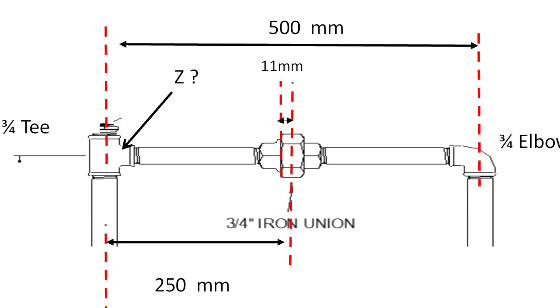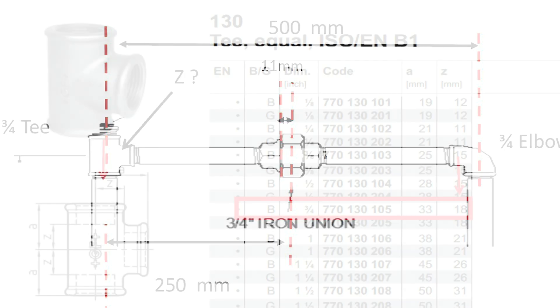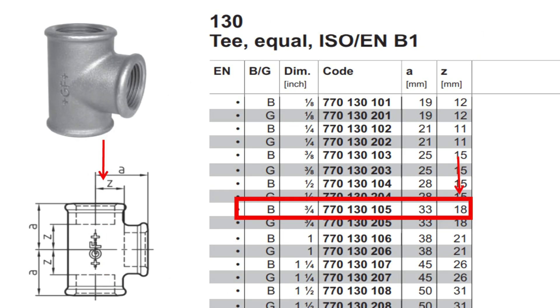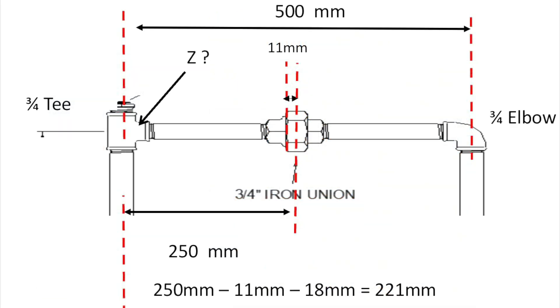Now let's work out the Z dimension for the T, which is 18mm. Right, so the Z dimension is 18mm for the T. Right, so what we do, just to recap, is 250mm, take away 11mm, which is half the Z dimension for the union, take away 18mm, which is the Z dimension for the T, gives us 221mm.